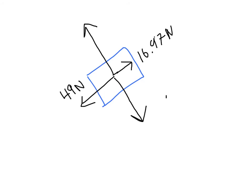So the net force actually acting on the block would be the 49 minus this, and its direction would be down the inclined plane. And that ends up being 32.03 newtons, and that would be down the plane.